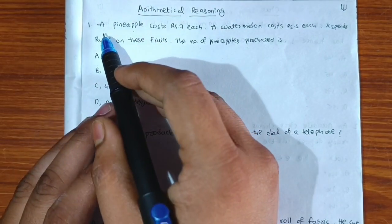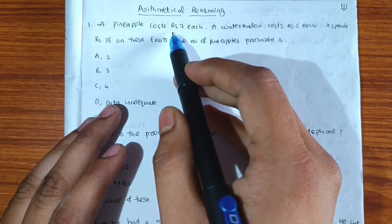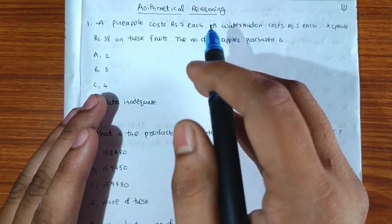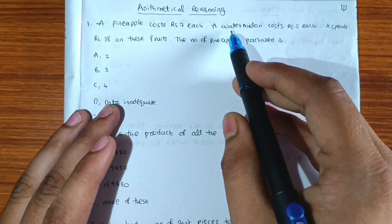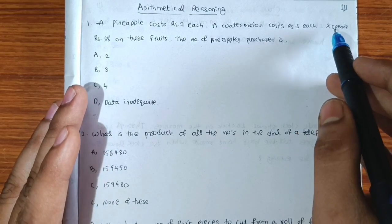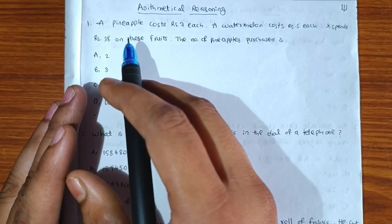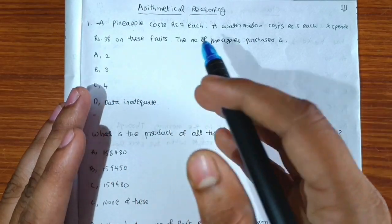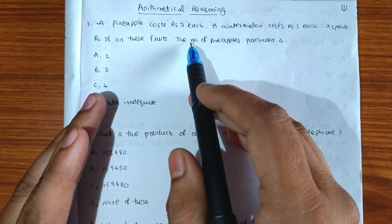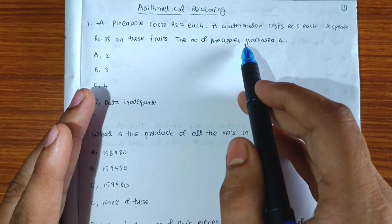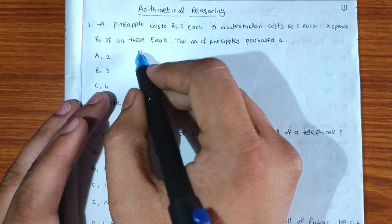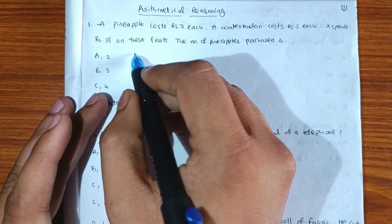In this topic, let us see the first question. A pineapple costs 7 rupees each, and a watermelon costs 5 rupees each. Person X spends 38 rupees on these fruits. We need to find the number of pineapples purchased. Let us write the equation.